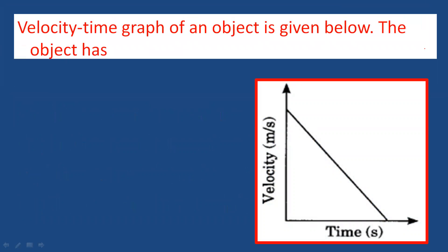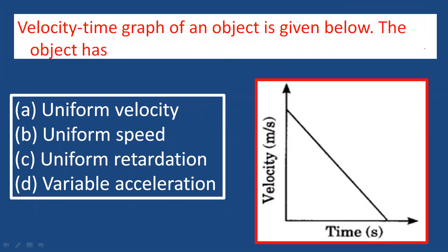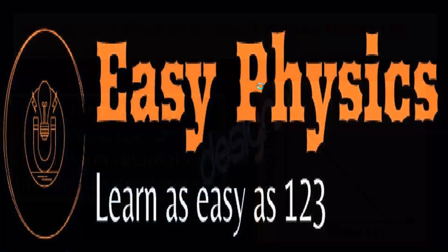Looking at this velocity-time graph, the velocity decreases uniformly to zero at a particular time. Because velocity is decreasing uniformly, we call this uniform retardation — which is acceleration in the negative direction.